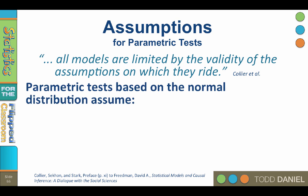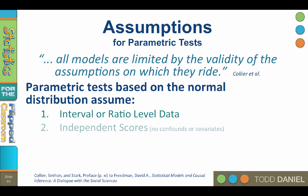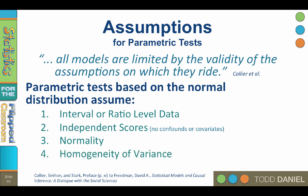Parametric statistics require that the population have certain characteristics. Parametric statistics based on the normal distribution assume that the data are at the interval or ratio level, that scores are independent with no confounds or covariates, and that the assumptions of normality and homogeneity of variance are met. So let's look at each one of those.